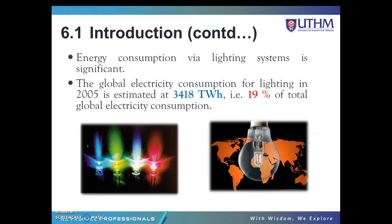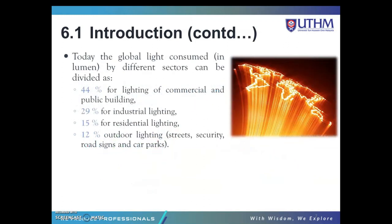Energy consumption via lighting systems is significant. Global electricity consumption for lighting in 2005 is estimated at 3418 terawatt-hours, which is 19% of total global electricity consumption. Today, global light consumption by sector is: 44% for commercial and public building lighting, 29% for industrial lighting, 15% for residential lighting, and 12% for outdoor lighting — streets, security, road signs, and car parks.